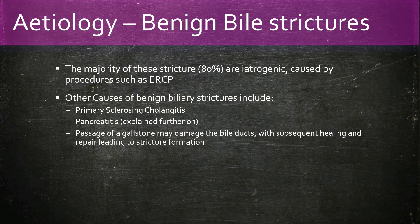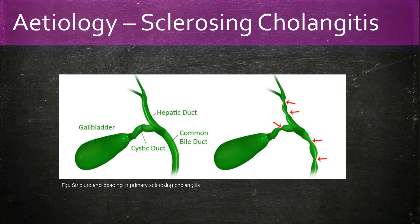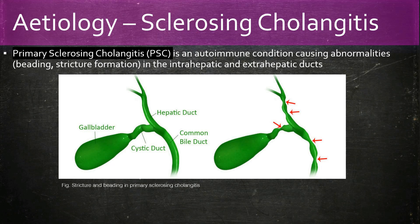Primary sclerosing cholangitis is an autoimmune disease causing abnormalities such as beading and strictures in both the intra-hepatic and extra-hepatic ducts. It is seen more in men and has a strong association with inflammatory bowel disease, in particular ulcerative colitis.